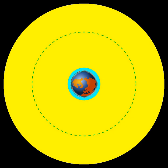Geocentric orbit, an orbit around the planet Earth, such as that of the Moon or of artificial satellites.